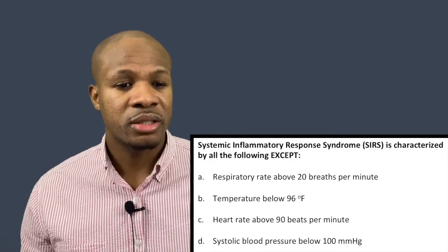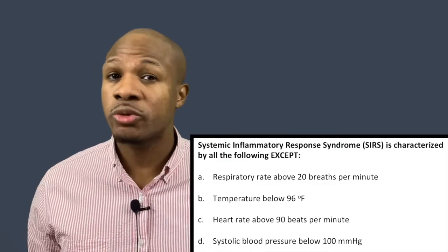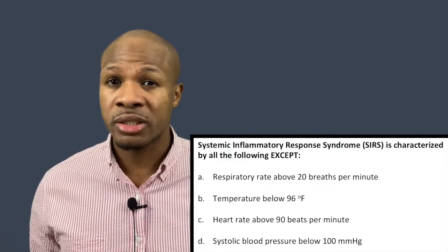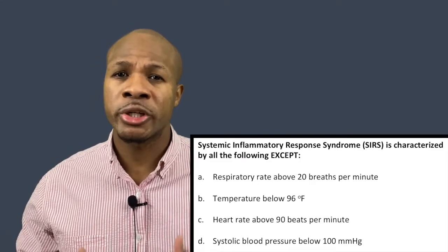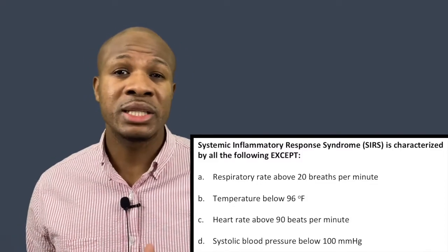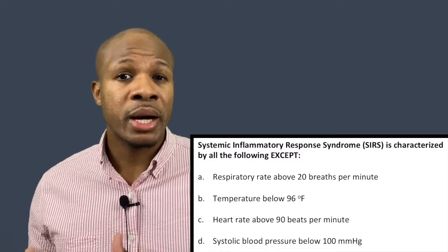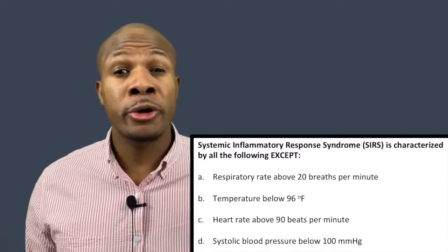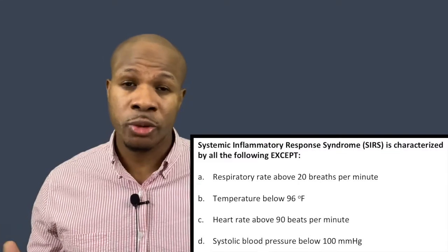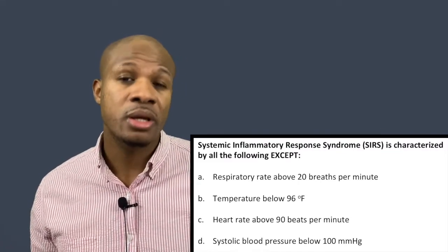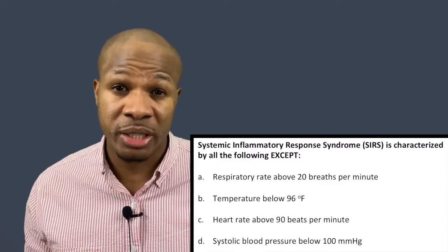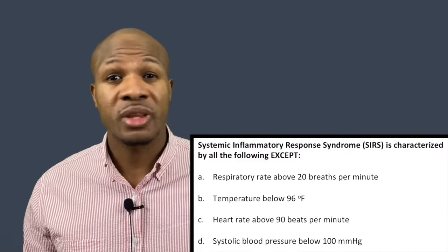Answer choice B says temperature below 96 degrees Fahrenheit. This one is a little tricky because you might think that someone developing an infection usually develops a fever, so temperature increases. But the body doesn't always react that way — it can either have a temperature spike or a significant temperature drop. A significant change in temperature, whether increased or decreased, would be associated with SIRS because it's a sign of distress. Optimal temperature is 98.6°F, so above 101 or below 96 is a problem.